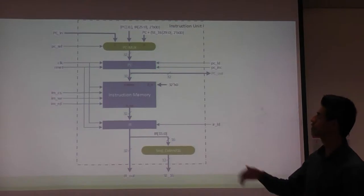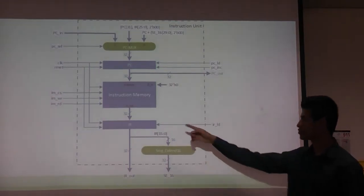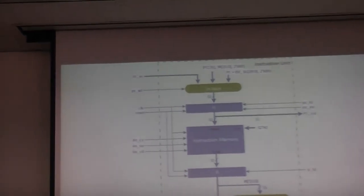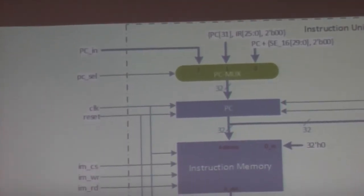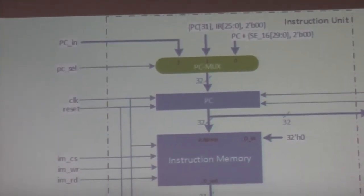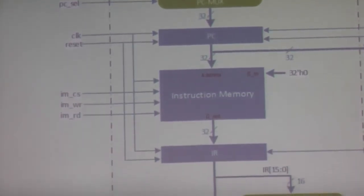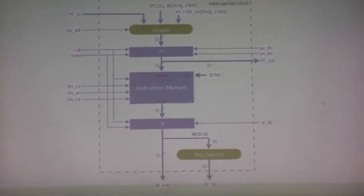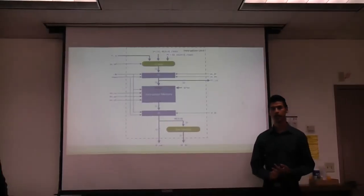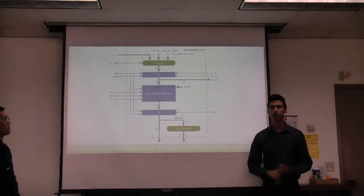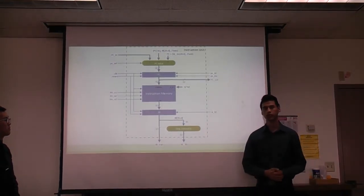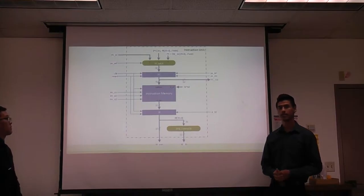In the instruction unit, we have the instruction memory, two registers for the program counter and instruction register, a MUX, and a list to decide between a value coming from the ALU, the effective address for jump, or the effective address for branch. We also have a sign extender to utilize the immediate offset for I-type instructions.